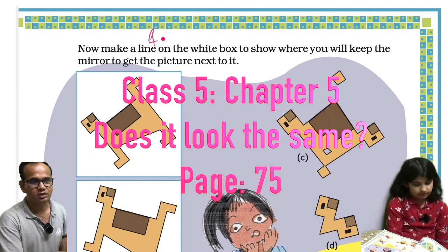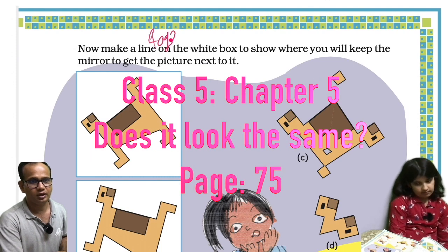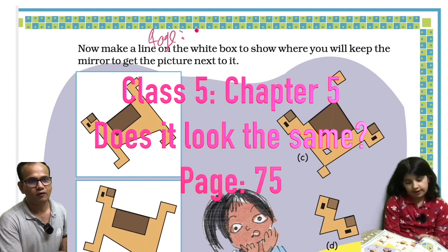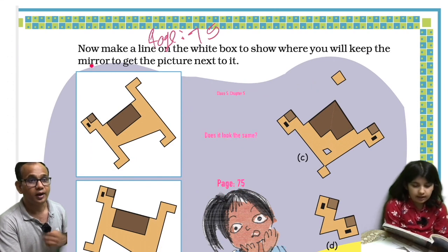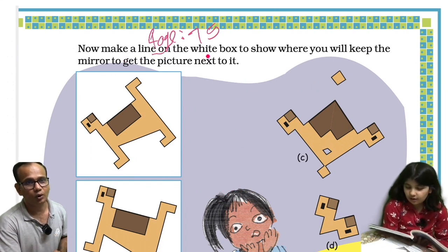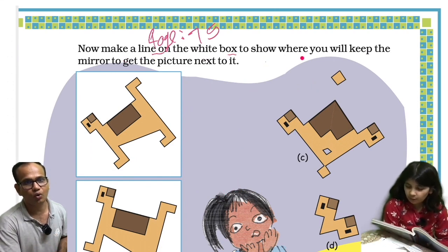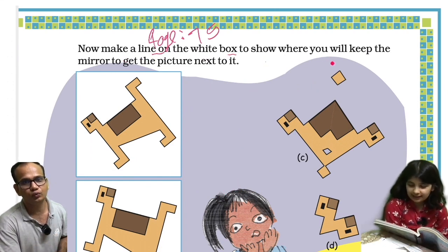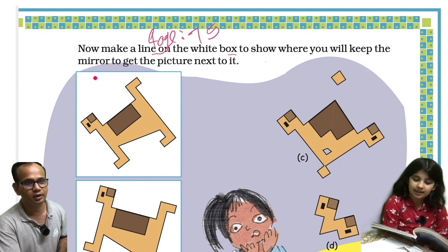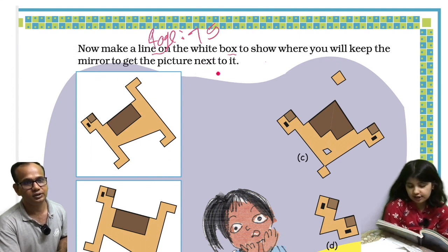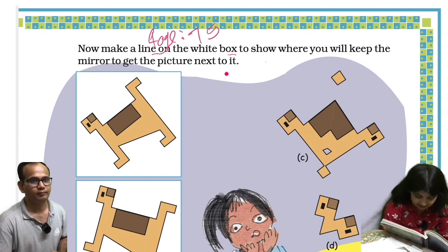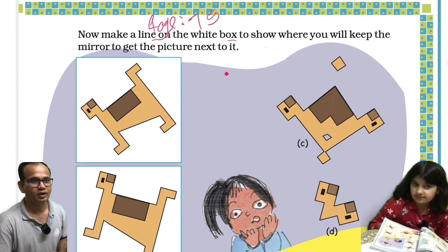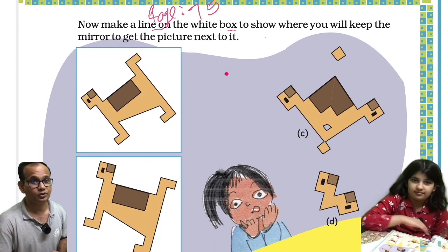Page number 75. Now make a line on the white box to show where you will keep the mirror to get the picture next to it. Make a line on the dotted line.